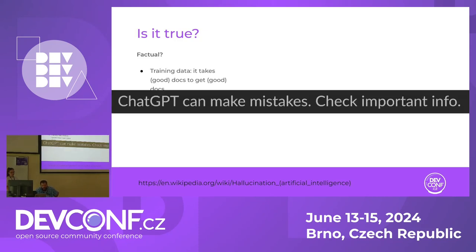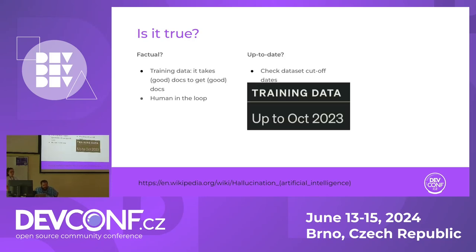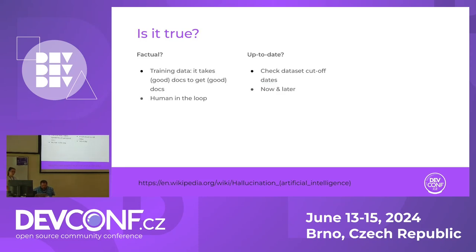Just like any technical writer would involve peer review in their process, having somebody review the information provided by a language model is crucial. The providers know that, so they include disclaimers. There is another consideration: how up-to-date is it? For the latest ChatGPT-4 model, the cutoff date for the training dataset is more than six months old. If there is a new version of software and you ask it to document it, it has no way of knowing about that.